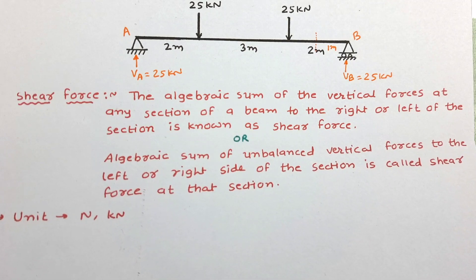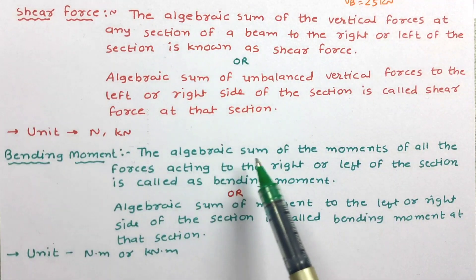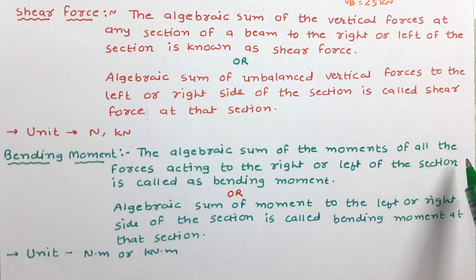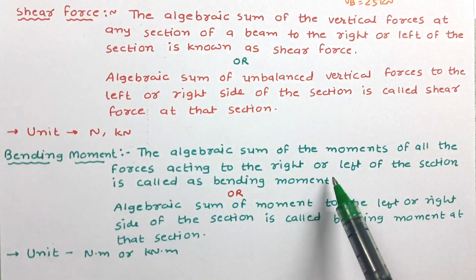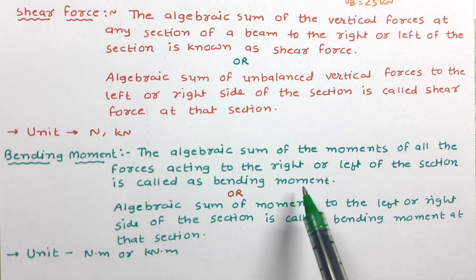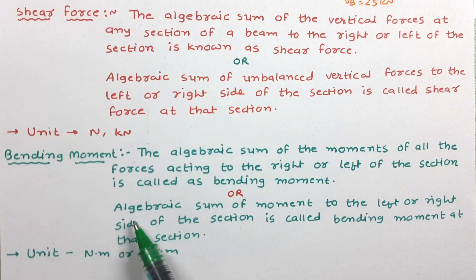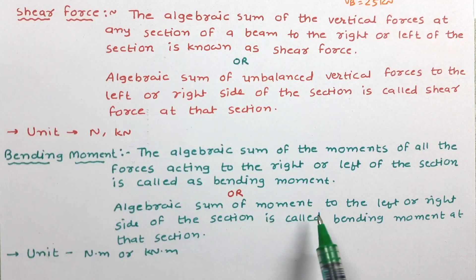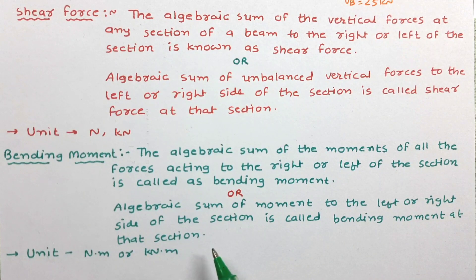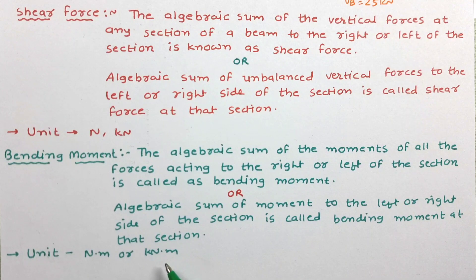Now let us define bending moment. The algebraic sum of all the moments of all the forces acting to the right or left of the section is called bending moment. In other words, the algebraic sum of moments to the left or right side of the section is called bending moment at that section. The unit of bending moment is Newton-meter or kilonewton-meter.